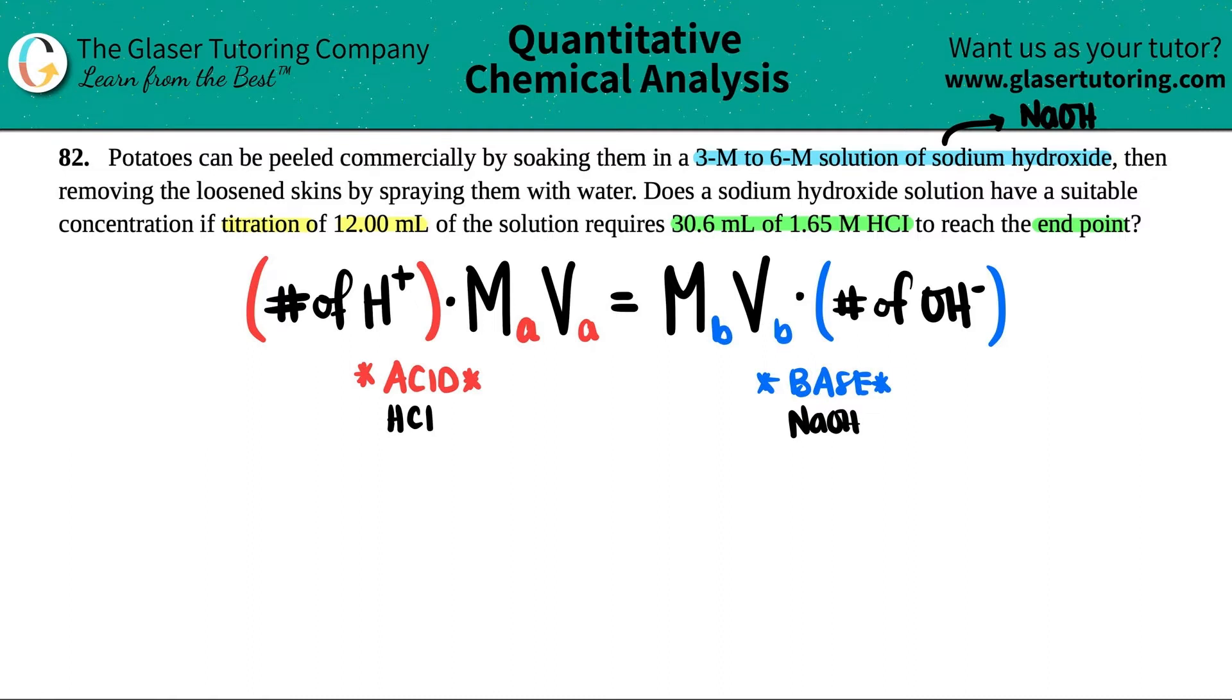But we can get these numbers by just looking at the compound here. The number of H+ in HCl—I only see that I have one H, so the number of H pluses is just going to be one. And the same thing goes for the base. If I look at NaOH, I only have one OH, right? So the number of OH- that I'm just going to have here is one.